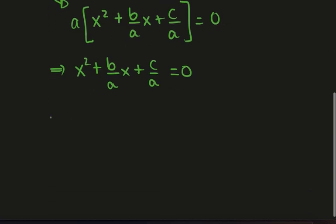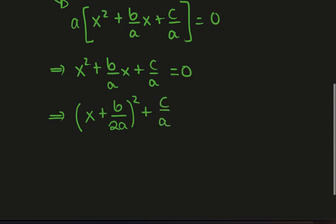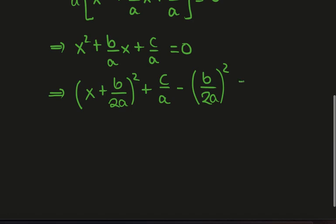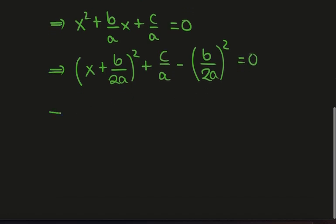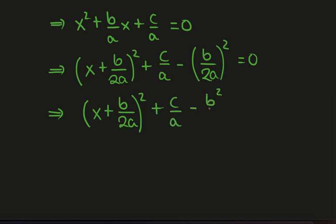Now I'll begin to complete the square. Remember we halve this coefficient, so we get b over 2a squared. That term tags along, and then the additional term that comes from this squaring we subtract. This still equals zero, and we have x plus b over 2a squared plus c over a minus b squared over 4a squared.